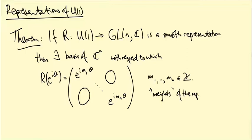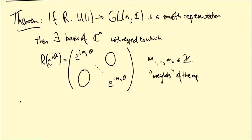In other words, a slightly fancier way of saying this is C^n, the vector space where the matrices act, splits as a direct sum V₁ ⊕ ... ⊕ Vₙ, where each Vᵢ is a one-dimensional space, just a copy of C,